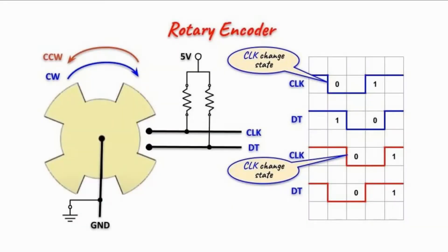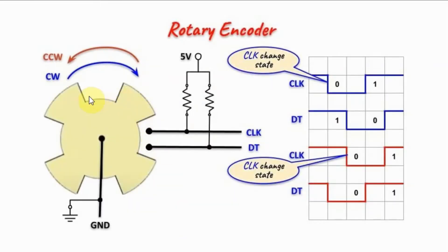The basic construction of a rotary encoder is that we have a rotating gear with cogs, which can rotate either clockwise or counter-clockwise. The circuit includes 3 lines: the ground line connected to the gear itself, and the clock and data lines connected to pull-up resistors. Before we move the rotary encoder, the signals on the clock and data lines are all at logic 1.